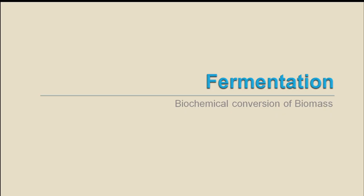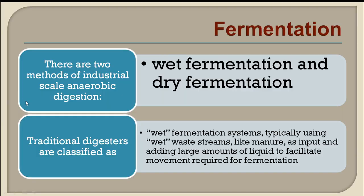Fermentation involves bacterial action to decompose and change the properties of some substances in the presence of moisture. There are two types of methods of industrial-scale anaerobic digestion: wet fermentation and dry fermentation. Traditional biogas digesters are said to be wet fermentation systems, typically using wet waste streams as we have seen in anaerobic digestion, where dry biomass is fed to the digester along with sufficient water.